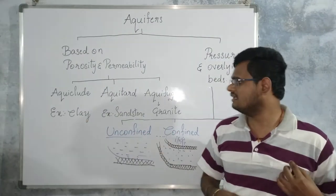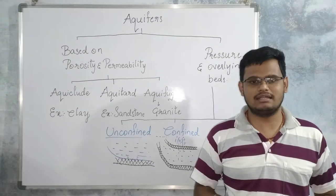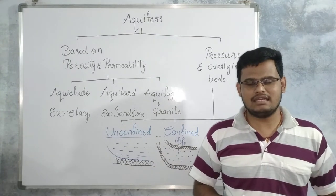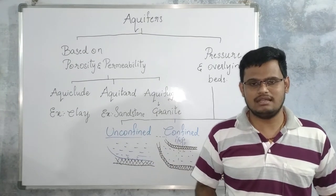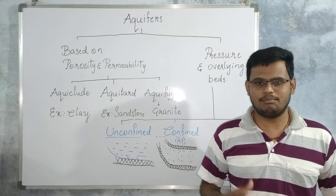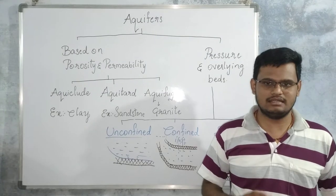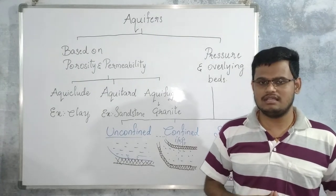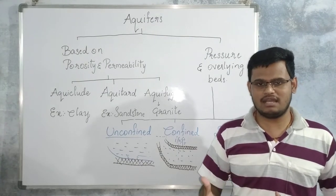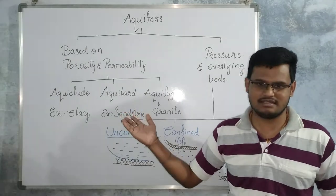The next type is aquitard. Aquitard is a type of aquifer in which the porosity and permeability are present in equal amounts. The best examples for aquitard are sandstone and gravel.